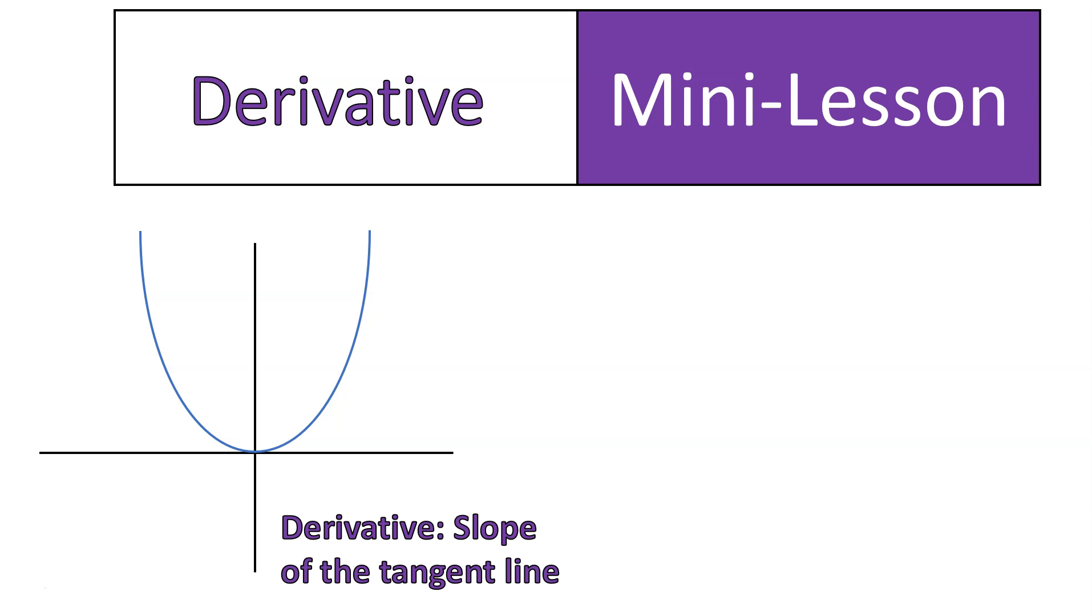A derivative is the slope of a tangent line, and a tangent line looks like this. It's a line that touches a curve at one point and is perpendicular to the curve at that point. So this tangent line, the green one here, you would say it has a positive slope, so that would be the slope of that line.